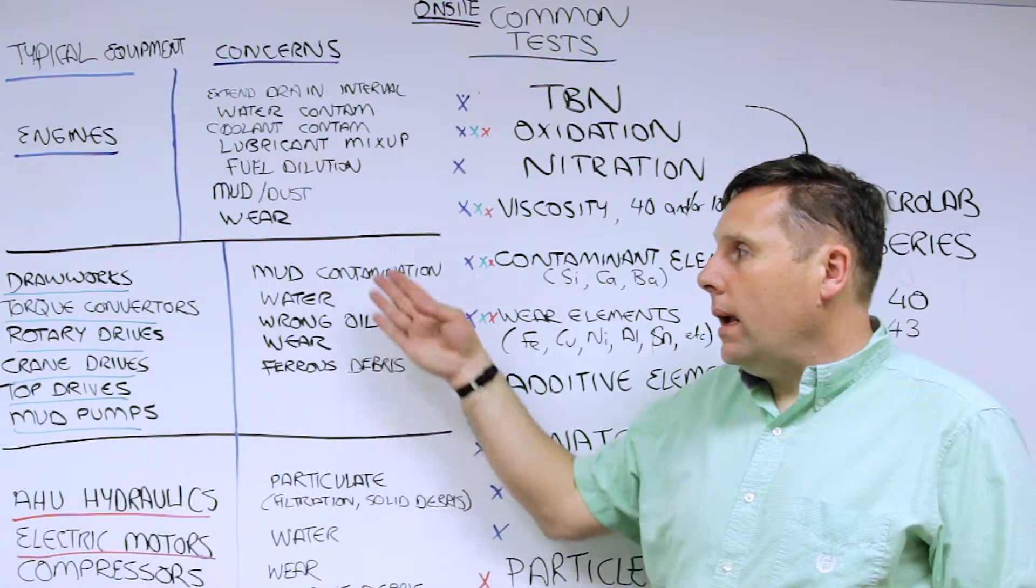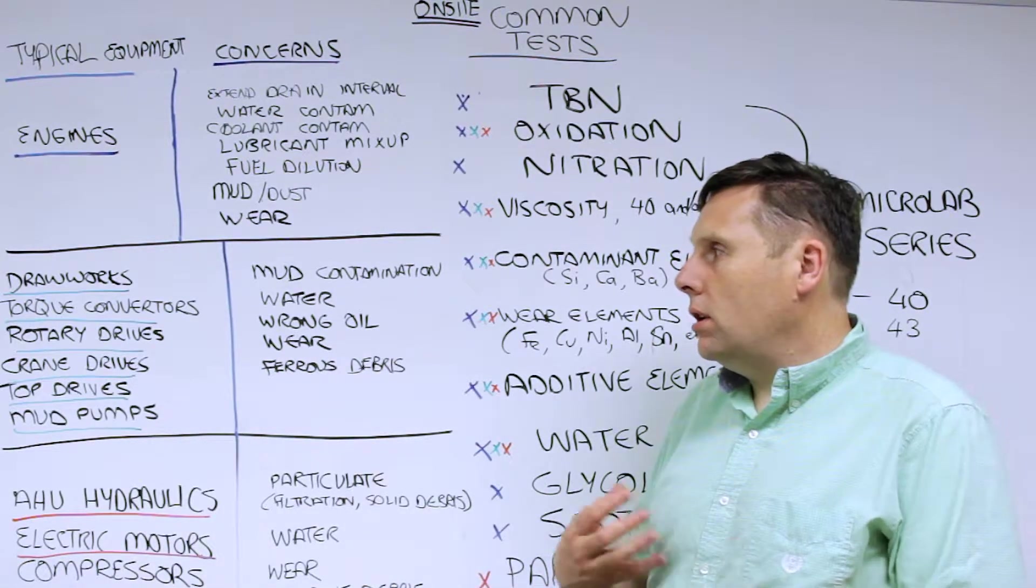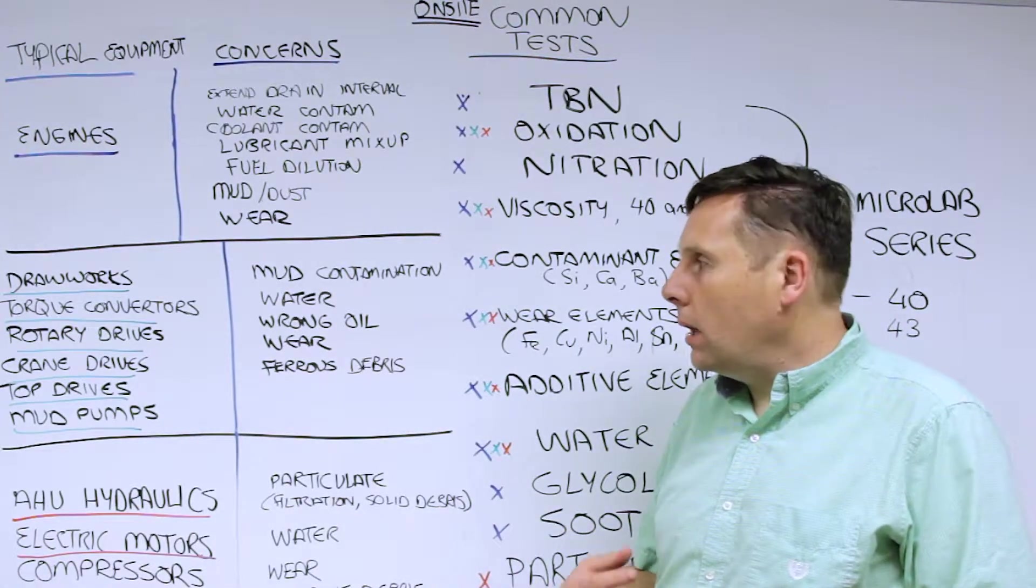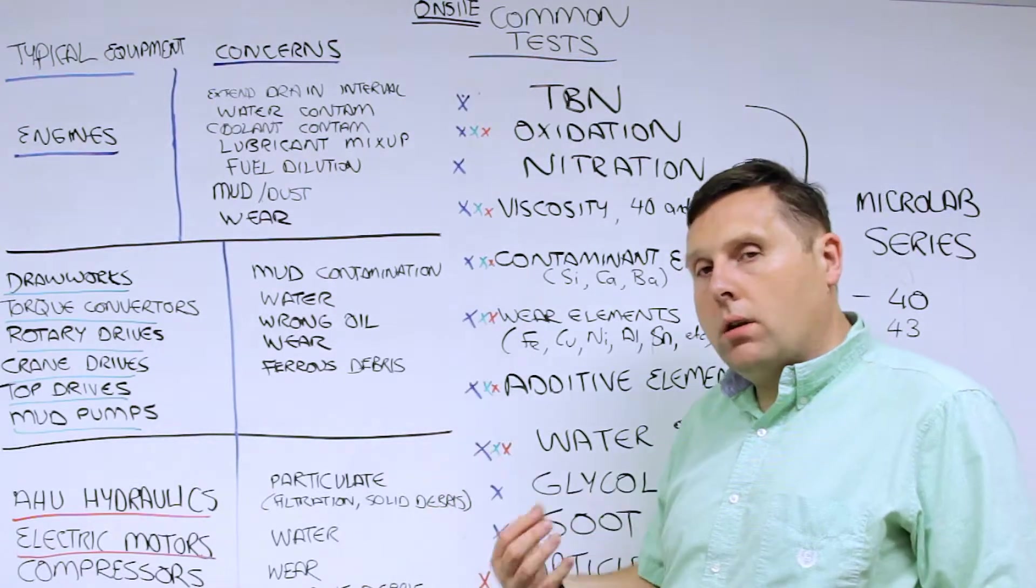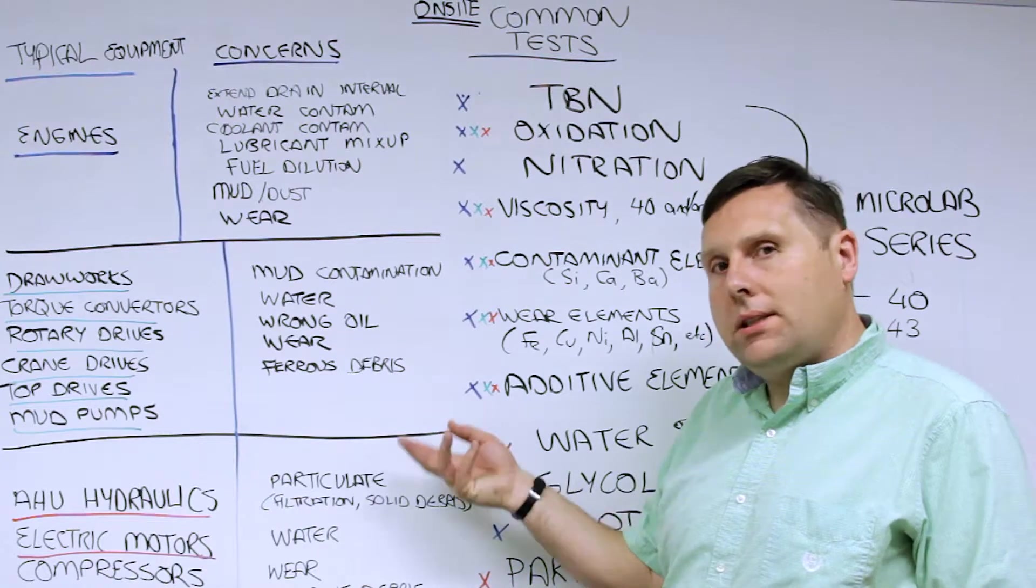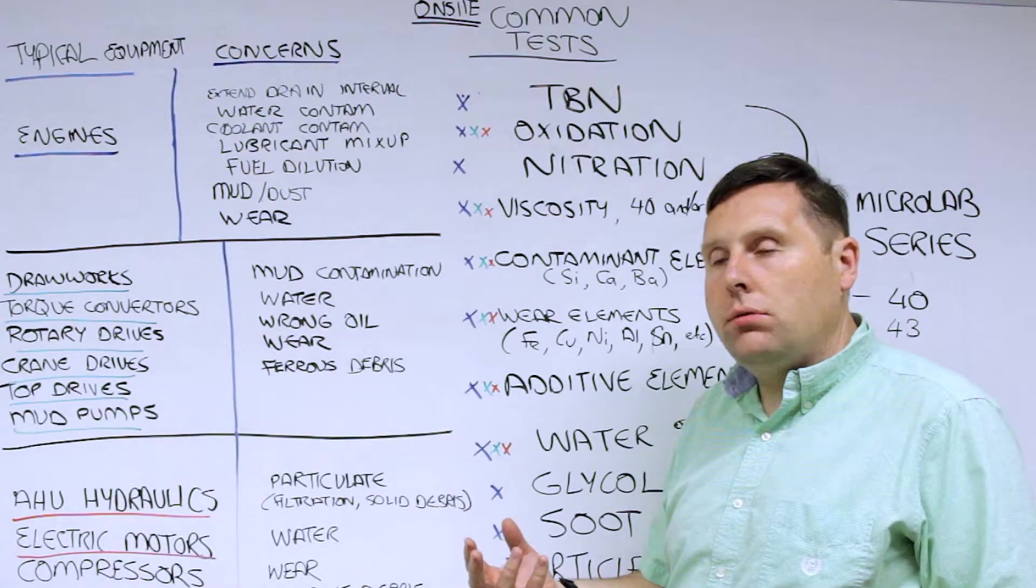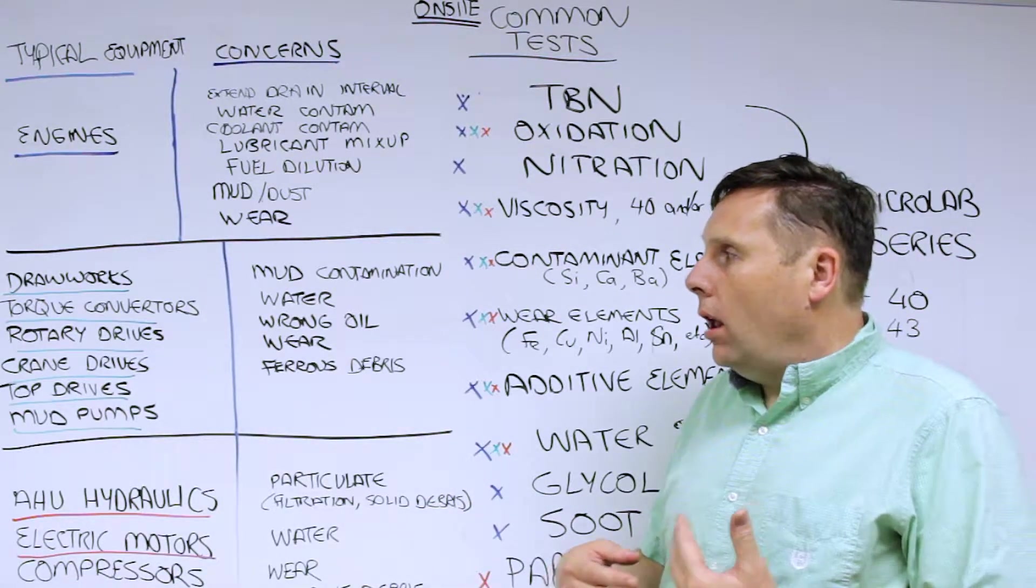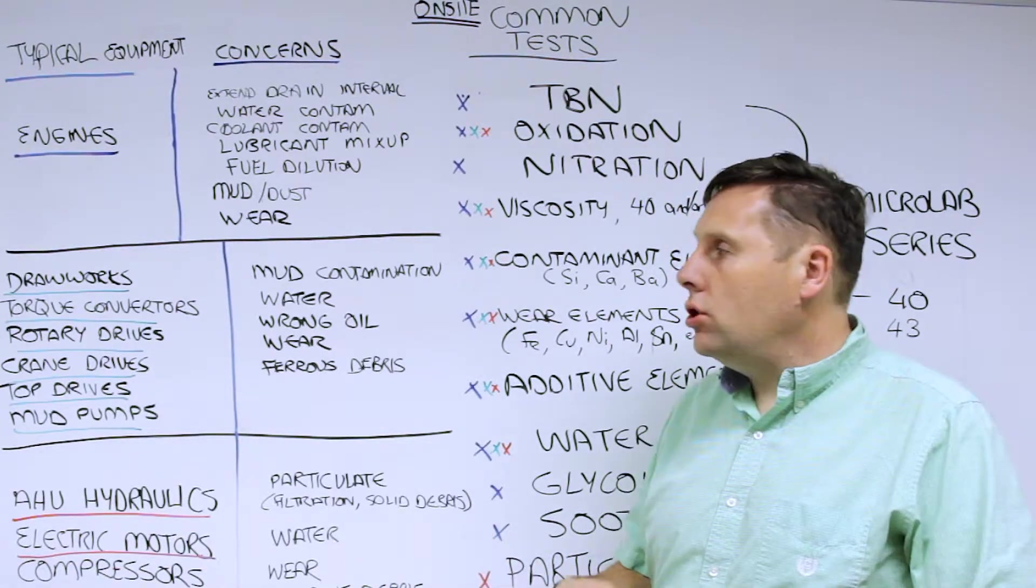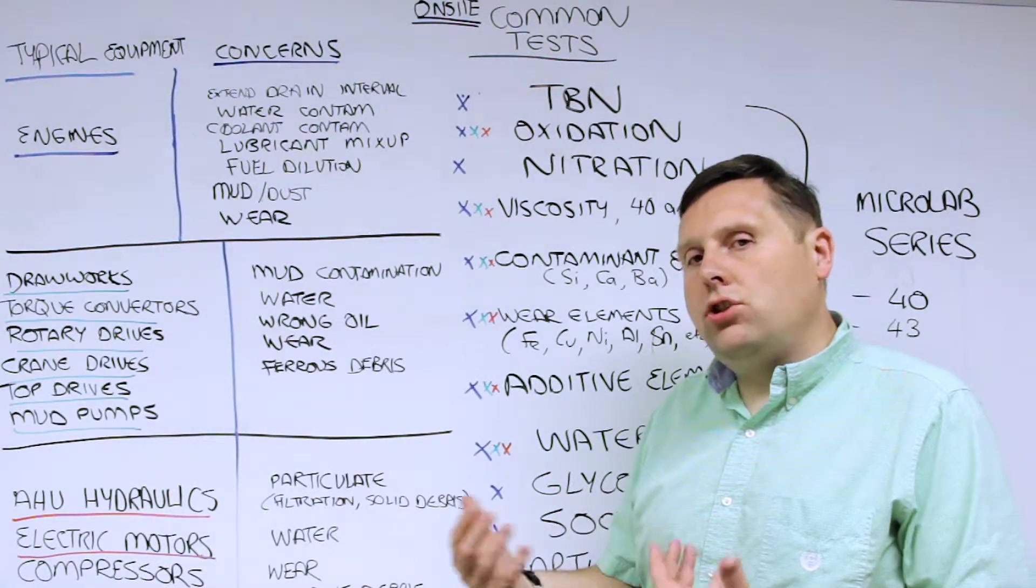For rotating equipment, you have a lot of gears, transmission systems, or gear drives. Mud contamination will generally lead off as the number one ingression issue. You have a lot of water, especially in tropical environments. Wrong oil, similar to the engine. Wear, ferrous debris - all of those are major issues. Long life is not necessarily a big concern; they expect to leave the oil in these systems, but you can have leakage so there's a lot of top-off. Long life considerations generally don't figure in.